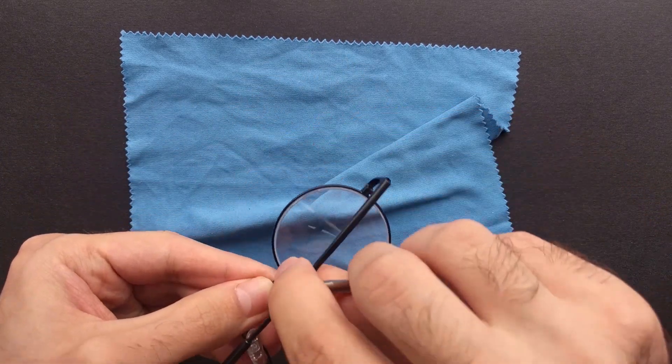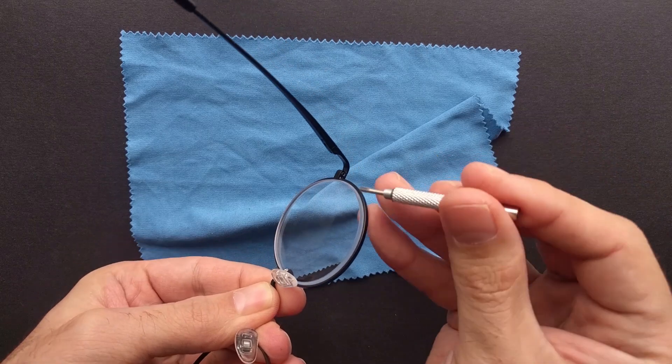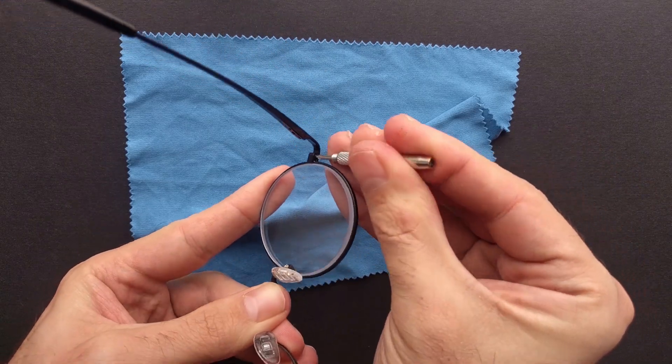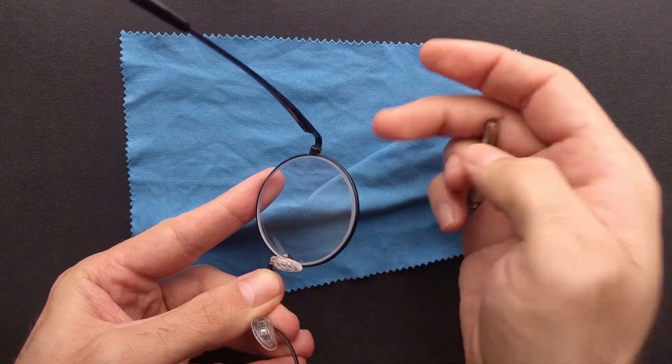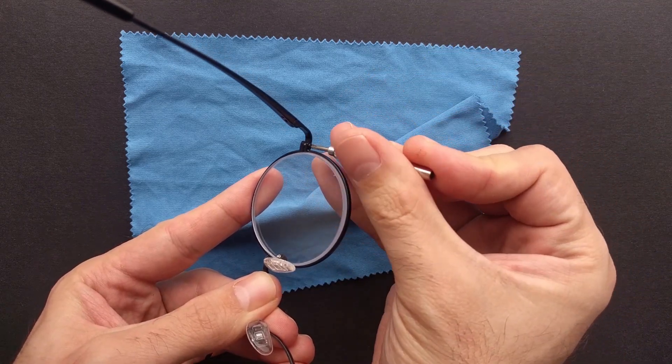And what I did here is I just marked where the top of the lenses is. Also, if you have left and right eyes with different diopters, you also have to mark that down, which one is which.